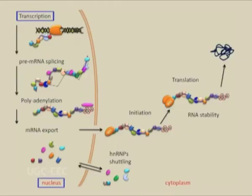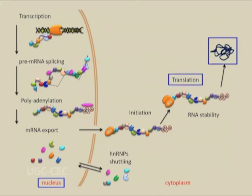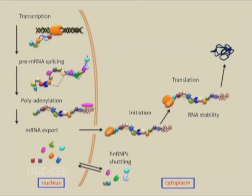DNA is transcribed into mRNA in the nucleus, and processing of mRNA is completed in the nucleus. It remains associated with specific hnRNP proteins in a messenger ribonuclear protein complex, or mRNP. Before it can be translated into the encoded protein, it must be exported out of the nucleus into the cytoplasm.